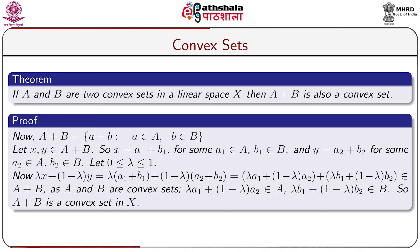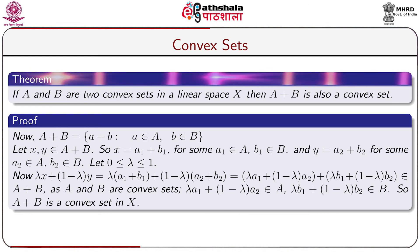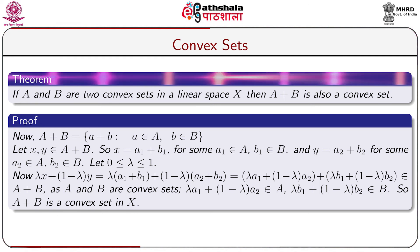Theorem: If A and B are two convex sets in a linear space X, then A + B is again a convex set in X. That is, the sum of two convex sets is again a convex set.